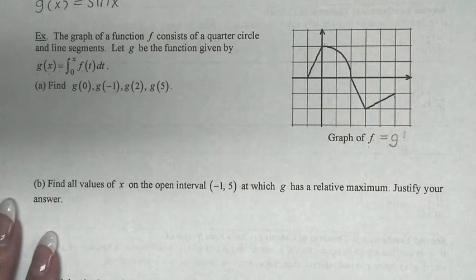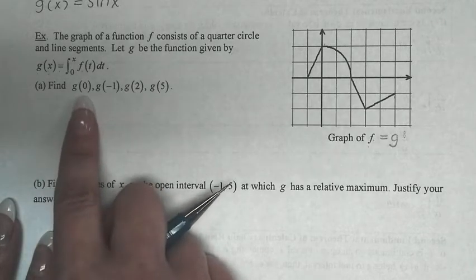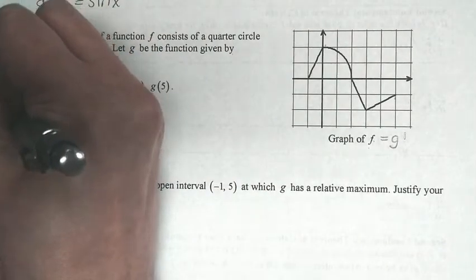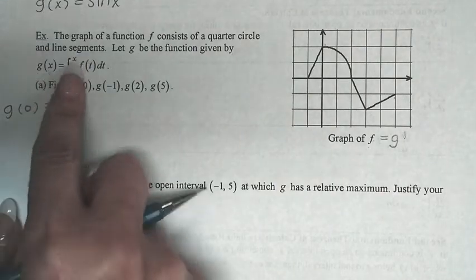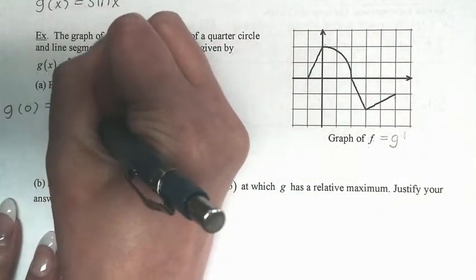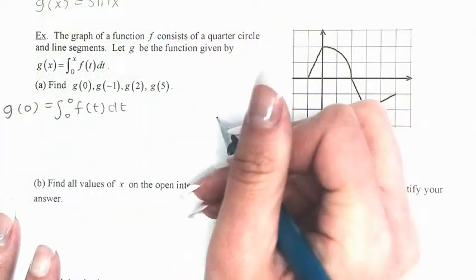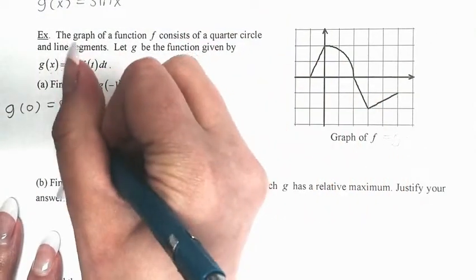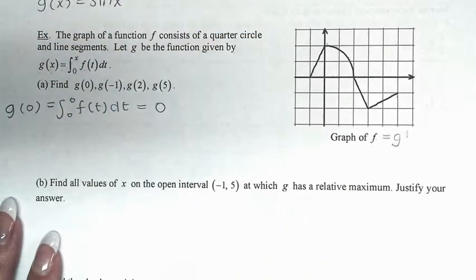First, they ask us to find g(0). Plugging 0 in for x gives the integral from 0 to 0 of f(t) dt. By the properties of integrals, when the limits of integration are the same, the area is 0. So g(0) = 0.